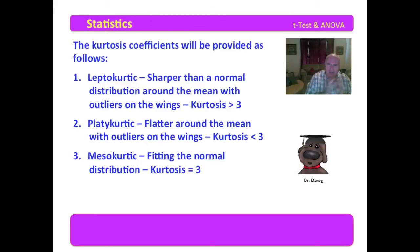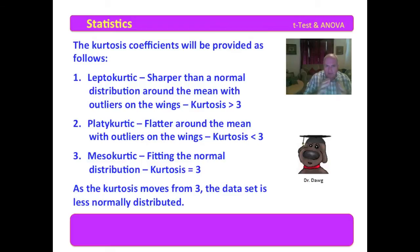It never really is exactly three. What this means is that if you move away from a kurtosis coefficient of three, either falling below it or above it, then what you have is a data set that is less normally distributed.